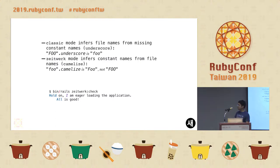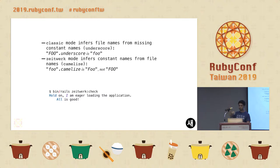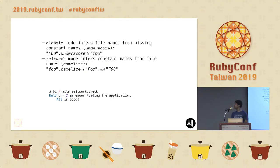In Zeitwerk mode, it's the opposite — it tries to find the constants from the file name instead. A difference here is you cannot load FooBOO with double big O's; it should follow the naming convention. If you have upgraded to Rails 6, the easiest way to check if everything is fine is just running zeitwerk:check, and it will load everything and see if all is fine.